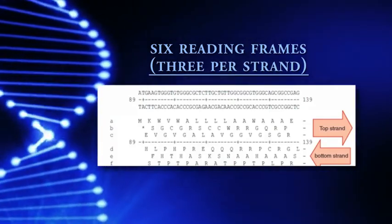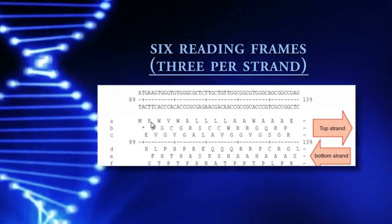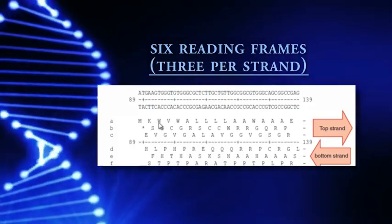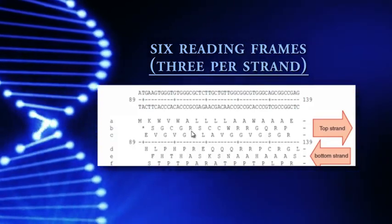If we started at the third position, we would get E, V, G, V. If we started at the fourth position, it would be a K like we have on the first line followed by W, V. We would be back to the same pattern.